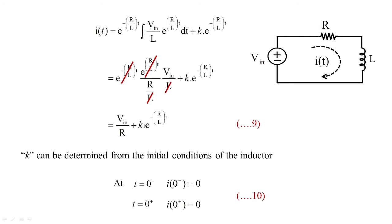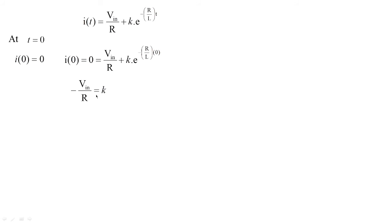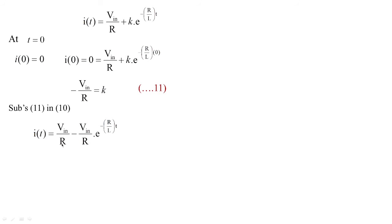Applying equation 10 into equation 9: at t = 0, i(0) = 0, so 0 = V_in/R + k, giving k = −V_in/R. Substituting back, i(t) = V_in/R − (V_in/R)·e^(−R/L·t), which simplifies to i(t) = (V_in/R)·[1 − e^(−R/L·t)]. This is equation 12.